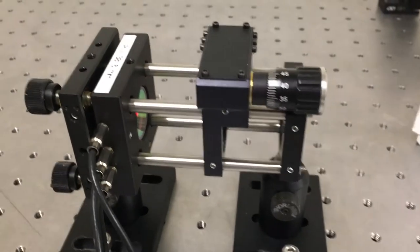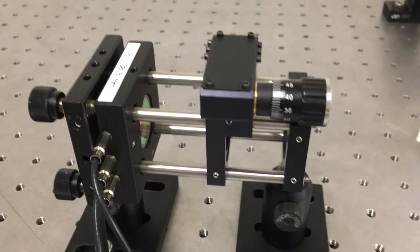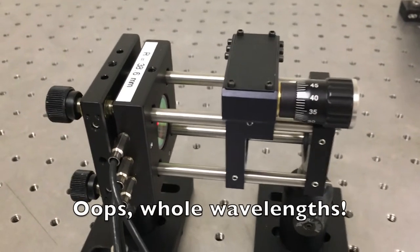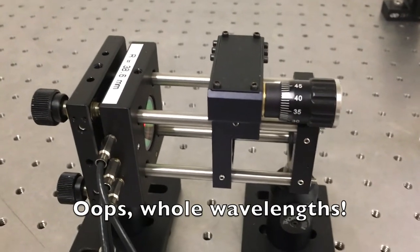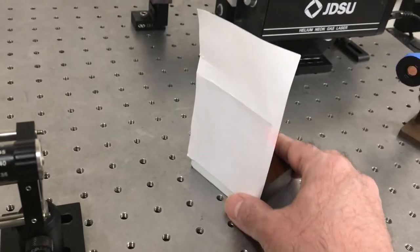If, in the course of those two passes, there's an integral number of half wavelengths, then you get a resonant condition and you get light coming out of it.